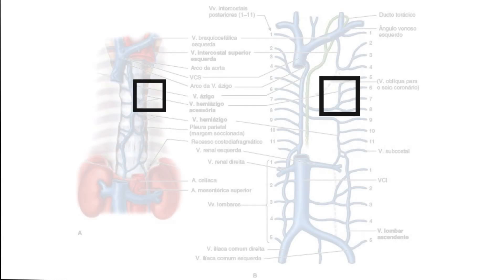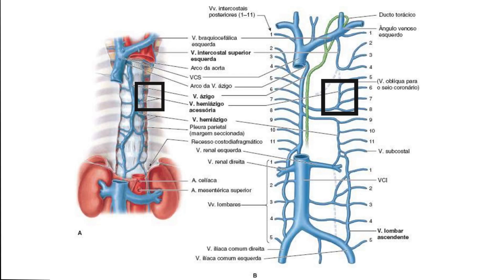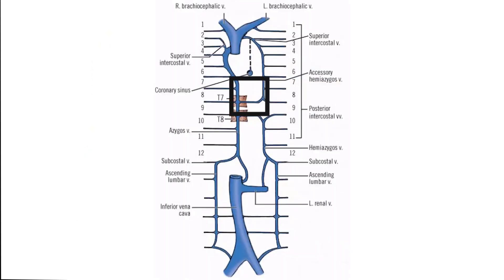A veia hemiázigos acessória começa na extremidade medial do quarto ou quinto espaço intercostal e desce à esquerda da coluna vertebral de T5 até T8. Cruza sobre a vértebra T7 ou T8, posteriormente à parte torácica da aorta e ducto torácico, onde se une à veia ázigos. Às vezes, a veia hemiázigos acessória se une à veia hemiázigos e drena com ela na veia ázigos.